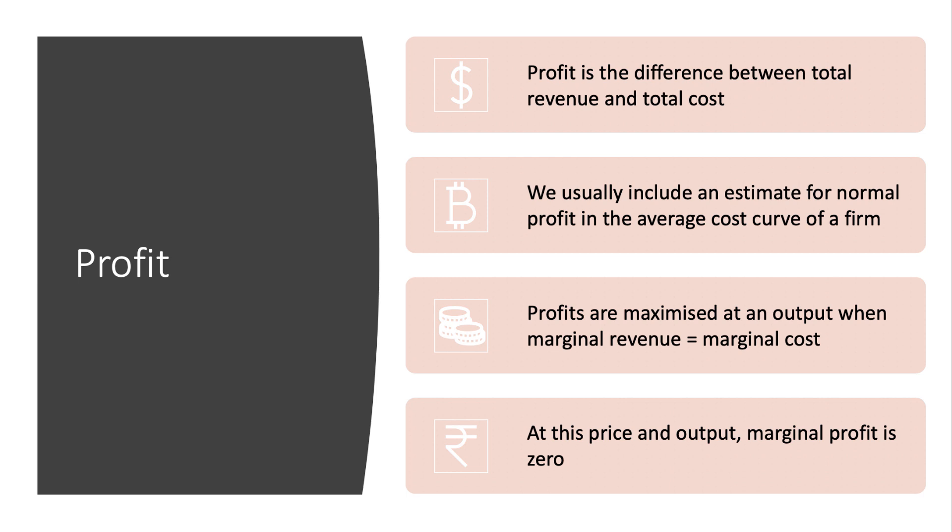If the firm is breaking even it's making normal profit. Profits are maximized at a level of production when marginal revenue equals marginal cost, and at this price and output marginal profit is zero.